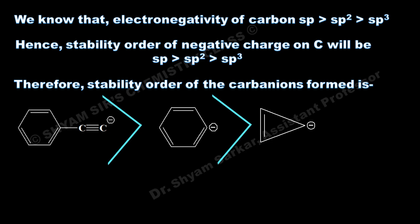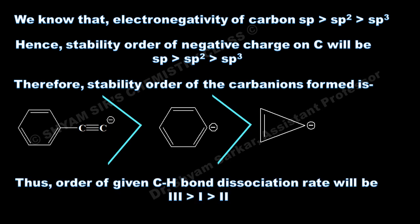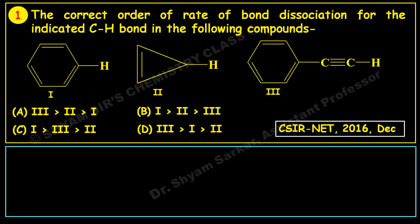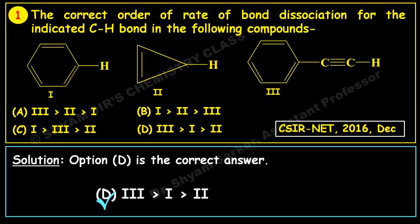Therefore, the order of the given C-H bond dissociation rate will be: 3 > 1 > 2. Matching this with the options, 3 > 1 > 2 matches with option D. That means option D is the correct answer. The C-H bond which will break fastest is the one where the carbon atom has sp hybridization, compared to sp² and sp³ hybrid carbon atoms.